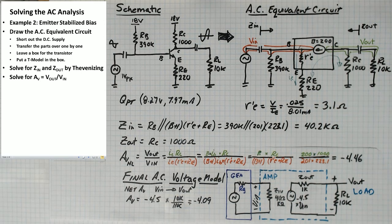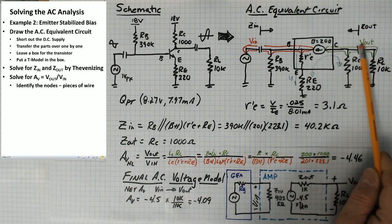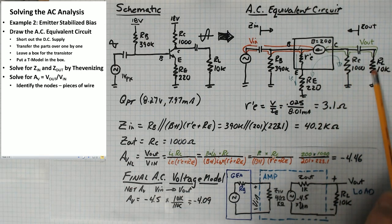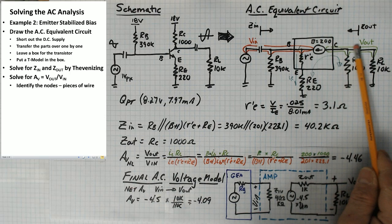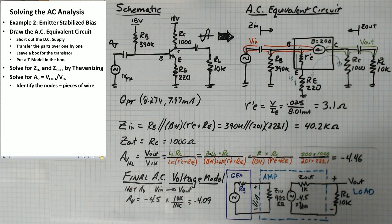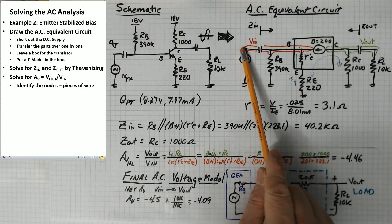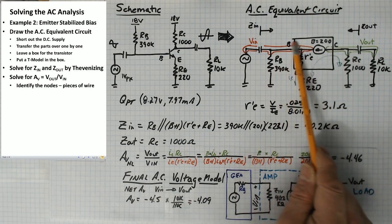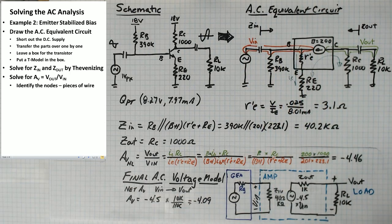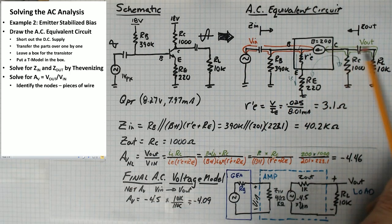So now we want to solve for AV. That's the final characteristic we need for this. And that's V out over V in. To do that, you need to identify the nodes or the pieces of wire that represent V out and V in. So here's V out. Basically, whatever is across the load is the output voltage. V in comes out of the signal generator. And that would represent this orange piece of wire here.